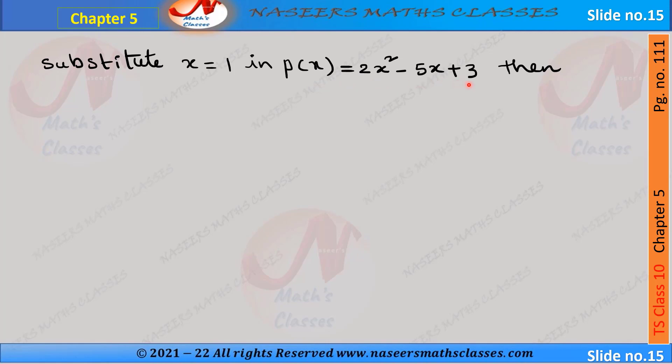p(x) = 2x² - 5x + 3, then p(x) is written as p(1) = 2(1)² - 5(1) + 3. After simplification we can write it as 2 × 1 - 5 + 3. Next this can be written as 2 - 2, because -5 + 3 = -2.